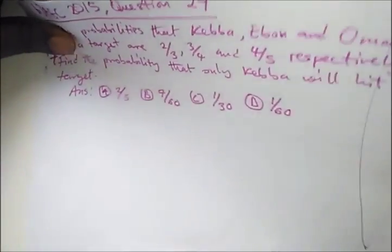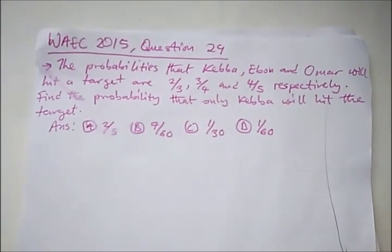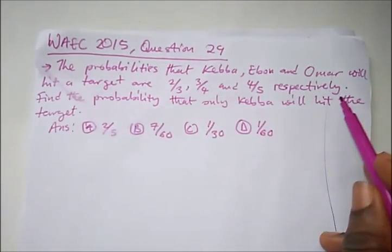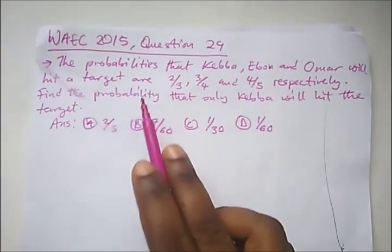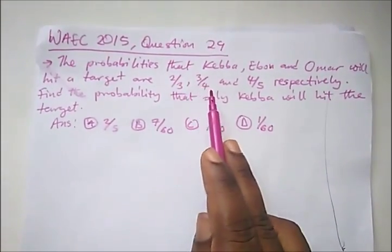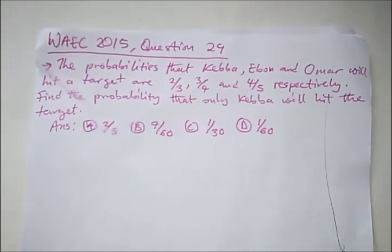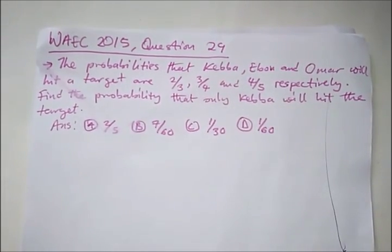The last question here is from WAEC 2015, question 29. It says the probability that Keba, Ebao, and Omar will hit the target are 2 over 3, 3 over 4, and 4 over 5 respectively. Find the probability that only Keba will hit the target.